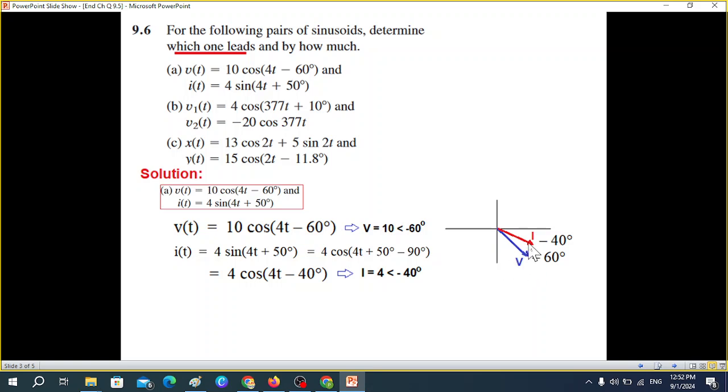The difference between minus 40 and minus 60 is 20 degrees. Using the same technique with anti-clockwise direction, i1 leads. So the answer is: I1 leads V1 by 20 degrees.